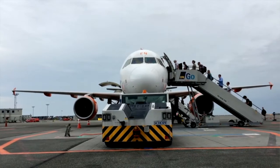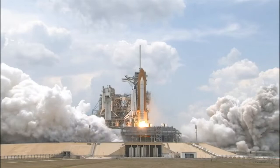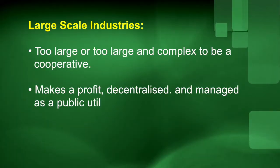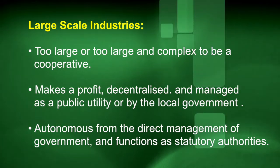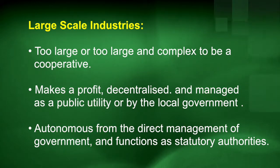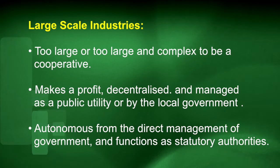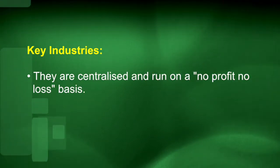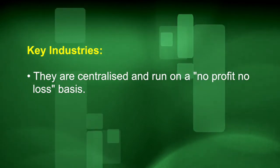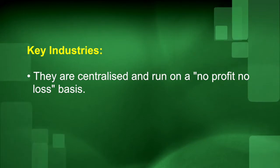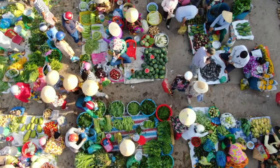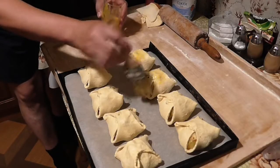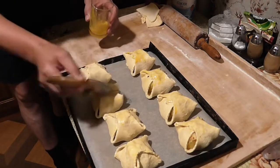Similarly, enterprises that cannot manage as a cooperative because they are too large or too complex should function as large scale industries as part of the public sector. They are generally structured to make a profit, decentralized, and managed as public utilities by the local government, but always structured as autonomous from the direct management of the government of the day, functioning as statutory authorities. Some of these large scale industries should be considered key industries and operate on the principle of no profit, no loss, and be centralized. Examples include pharmaceuticals, raw material, and large scale energy suppliers. Cooperatives have the potential to employ many more people than capitalist businesses, and in a Proutist system, the active support of small scale business and cooperatives is a major factor in guaranteeing full employment.